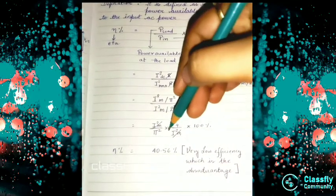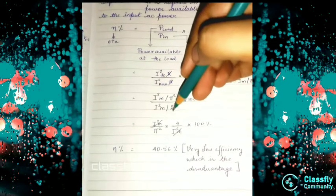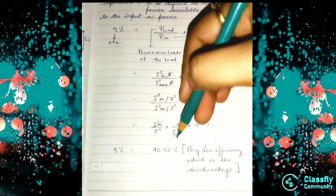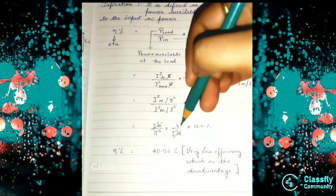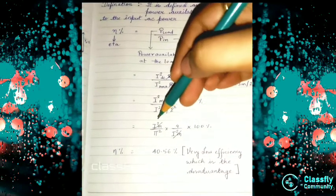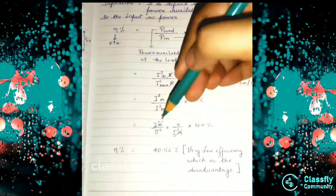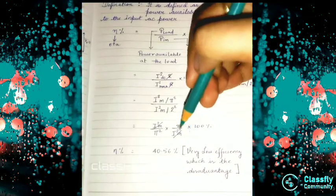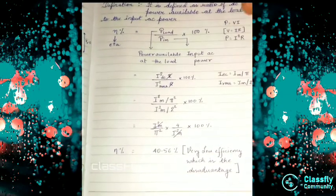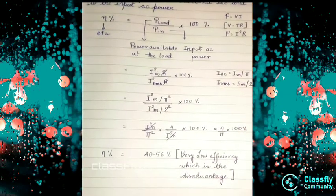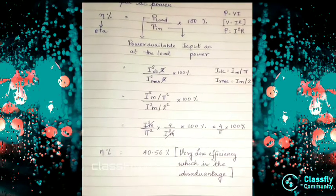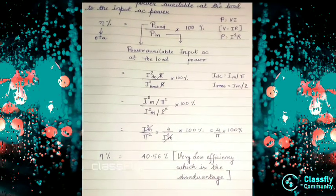So I²_M/4 is in the denominator. Taking the reciprocal and canceling I²_M from numerator and denominator, we are left with 4/π² × 100%.